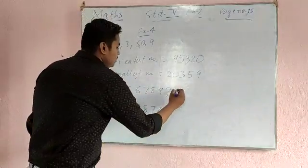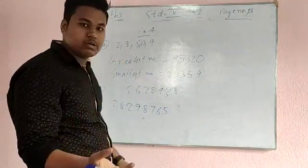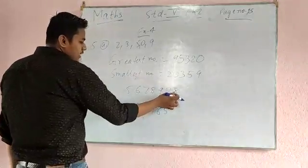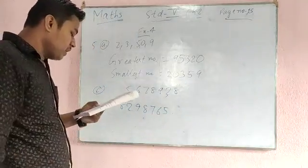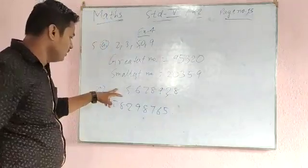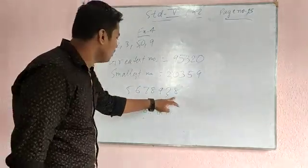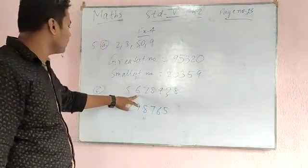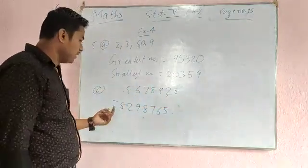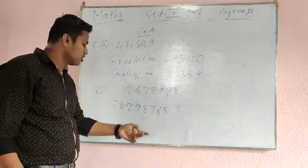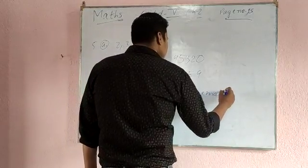So I have taken a 7-digit number of my own choice — you can also take a number of your own choice. Now reverse it — it is the opposite: 8, 2, 9, 8, 7, 6, 5. Now the question is: find which of the two numbers is smaller. So this is 5,678,928 and the reversed is 5,298,765. You have to find which is smaller — 5,678,928 is smaller.